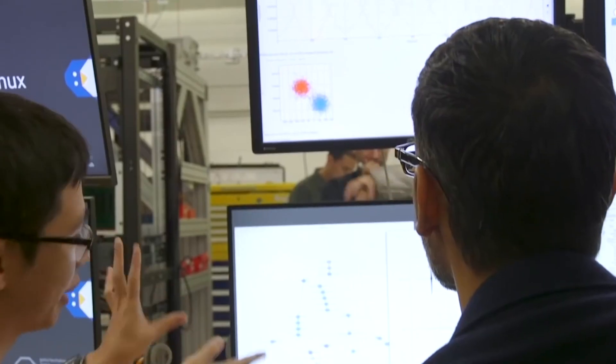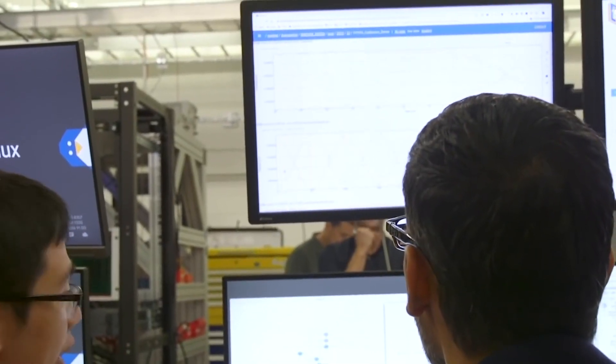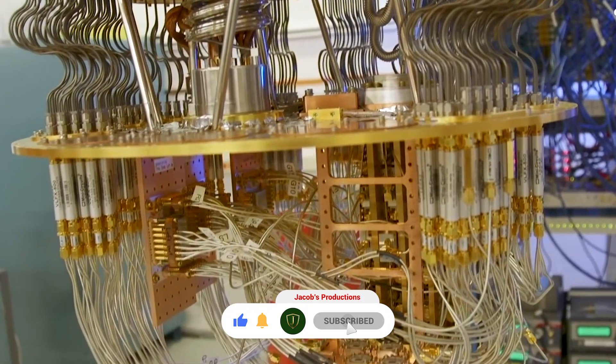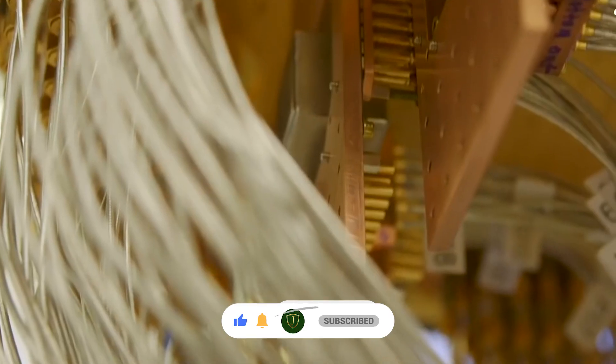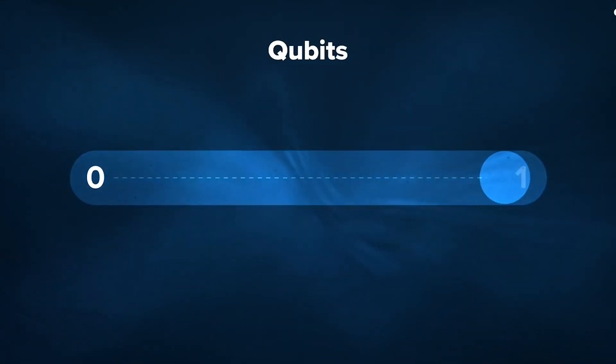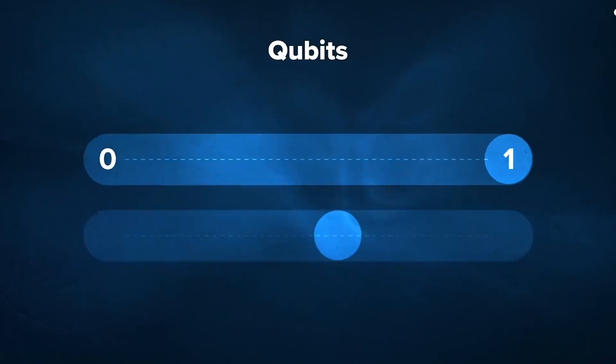Nobody is quite there yet. While small-scale quantum computers are operational today, a major hurdle to scaling up the technology is the issue of dealing with errors. Compared to bits, qubits are incredibly fragile. Even the slightest disturbance from the outside world is enough to destroy quantum information.